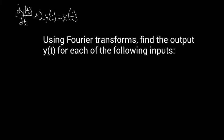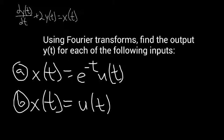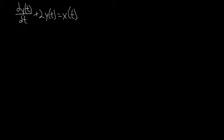The question is, using Fourier transforms, find the output y(t) for each of the following inputs: a) x(t) equals e to the minus t times u(t), and b) x(t) equals u(t).